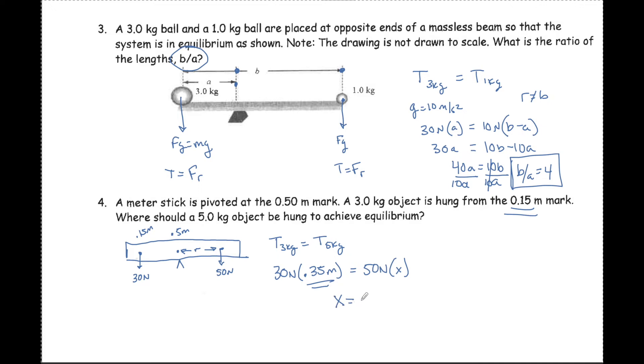But that's not what they asked. They asked where should it be hung to achieve equilibrium. If you hung it at 0.21 here, that would not be good. The position you want is from the focal point, so the real answer is 0.5 plus 0.21. You hang that on the meter stick at 0.71 meters.